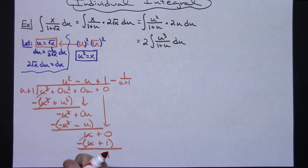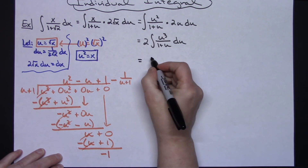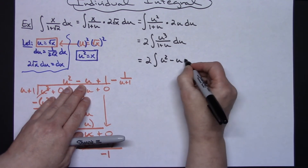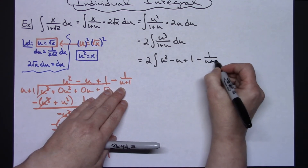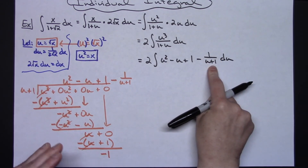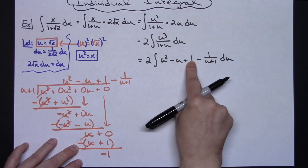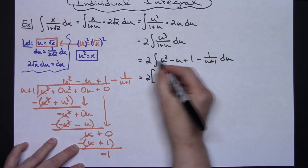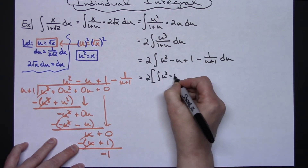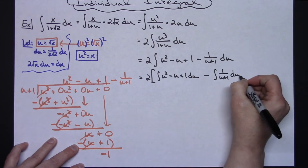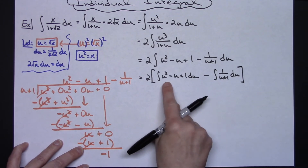This polynomial expression is much easier to integrate than the original rational function. Rewriting, we have 2 times the integral of u squared minus u plus 1 minus 1 over (u+1) du. We can break this into two separate integrals: 2 times the integral of u squared minus u plus 1 du, minus the integral of 1 over (u+1) du.